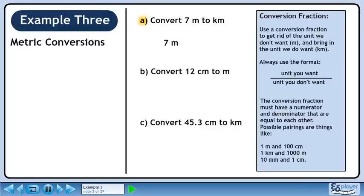Always use the format: unit you want over unit you don't want. The conversion fraction must have a numerator and denominator that are equal to each other. Possible pairings are things like 1 meter and 100 centimeters, 1 kilometer and 1000 meters, or 10 millimeters and 1 centimeter.